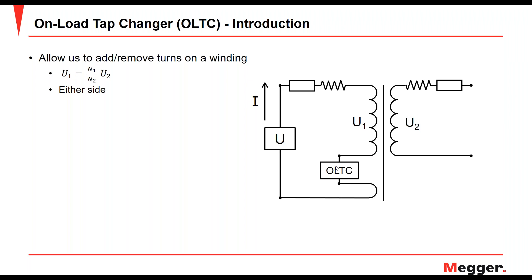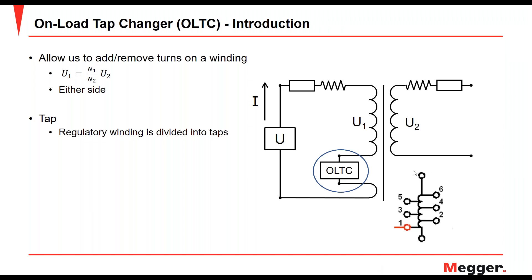Normally it's located where you have the neutral crossing. If it's on the secondary side, it will have a higher current - that's most common in the US. The primary side is more common in Europe and throughout Asia. The load varies during the day, so when you have less load on the grid, you want to adjust. The OLTC has tabs, and the regulatory winding is divided into different tab positions, each corresponding to a different voltage.